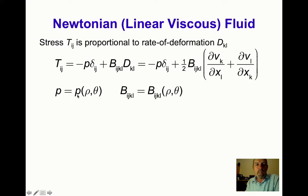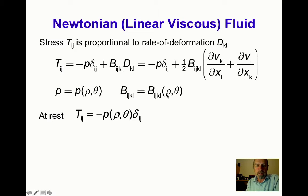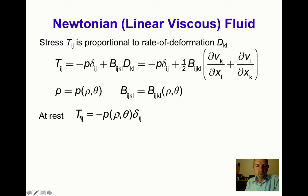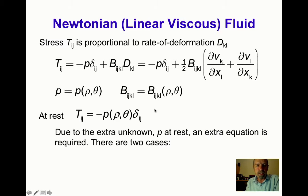Here P is a function of density and temperature, and the components of the fourth-order viscosity tensor B_ijkl are also functions of density and temperature. If there's no flow, the fluid at rest supports a hydrostatic pressure P, and so the stress is simply T_ij equals minus P times delta_ij.